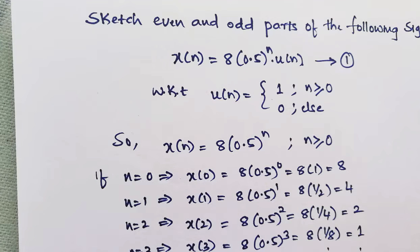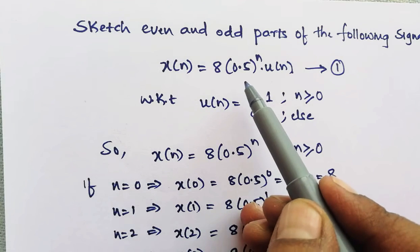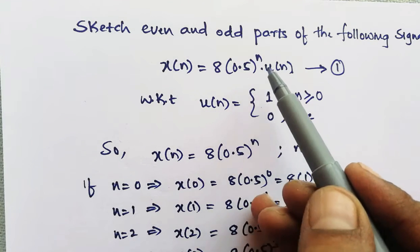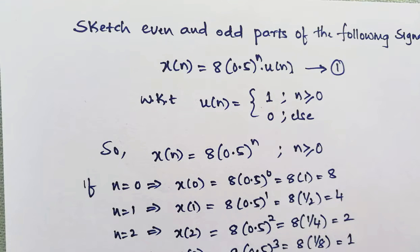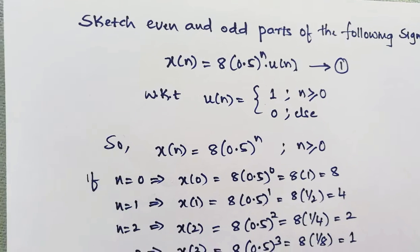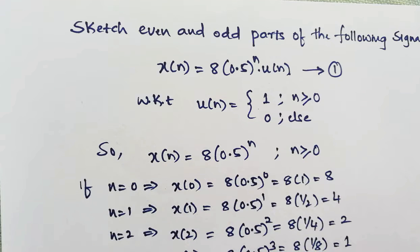Hi friends, in this session we will discuss finding the even and odd components of the given signal for the discrete time signal. This is the given example: x of n equal to 8 multiplied by 0.5 raised to n, u of n. First we have to sketch before finding the even component and odd component for the given signal.